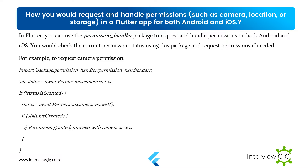How would you request and handle permissions, such as camera, location, or storage, in a Flutter app for both Android and iOS? In Flutter, you can use the permission_handler package to request and handle permissions on both Android and iOS. You would check the current permission status using this package and request permissions if needed. For example, to request camera permission.